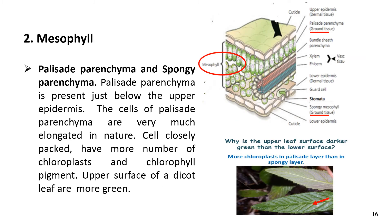Mesophyll is a ground tissue present between the upper epidermis and the lower epidermis. It consists of two types of tissue: palisade parenchyma and spongy parenchyma. Palisade parenchyma is present just below the upper epidermis in one or two layers. The cells of palisade parenchyma are very much elongated in nature and are closely packed in each layer with narrow intercellular space between them.